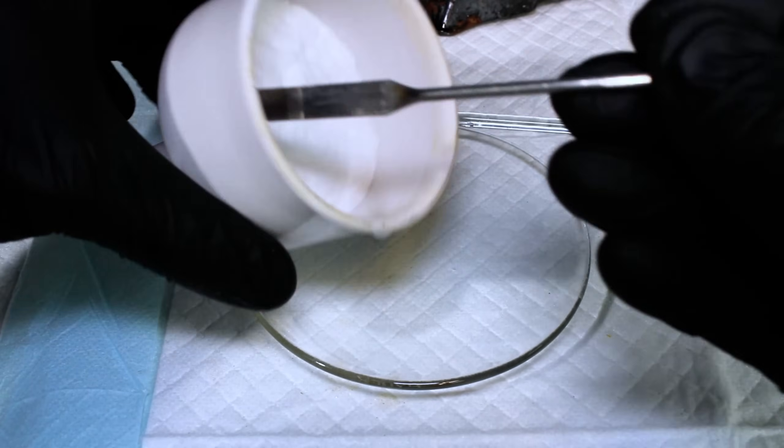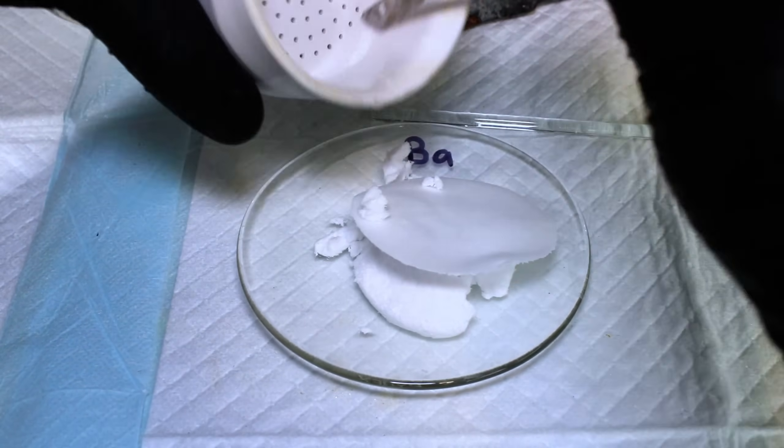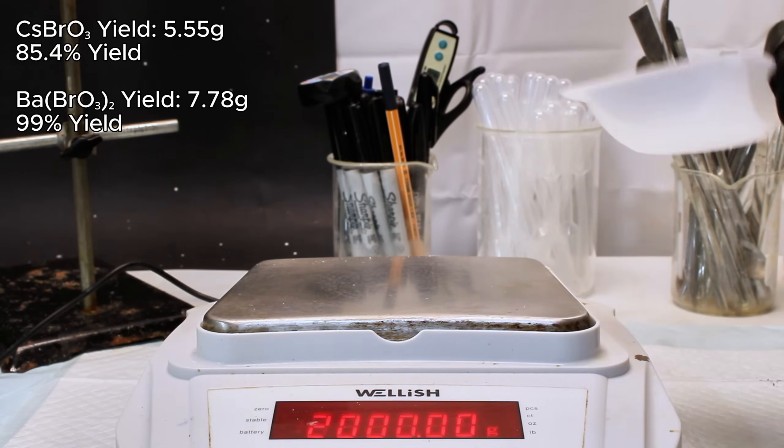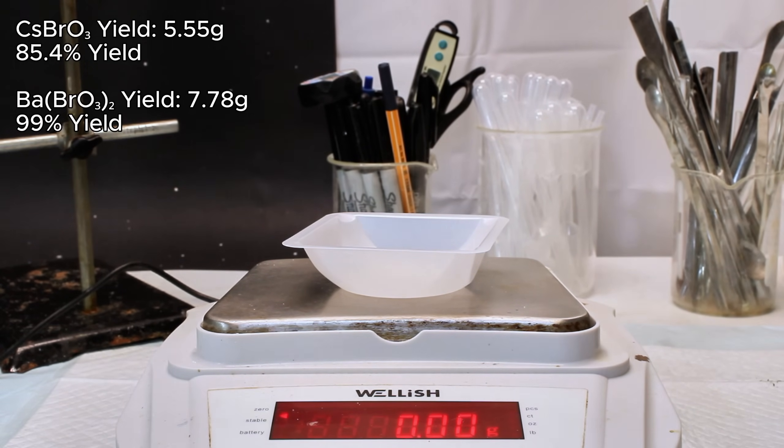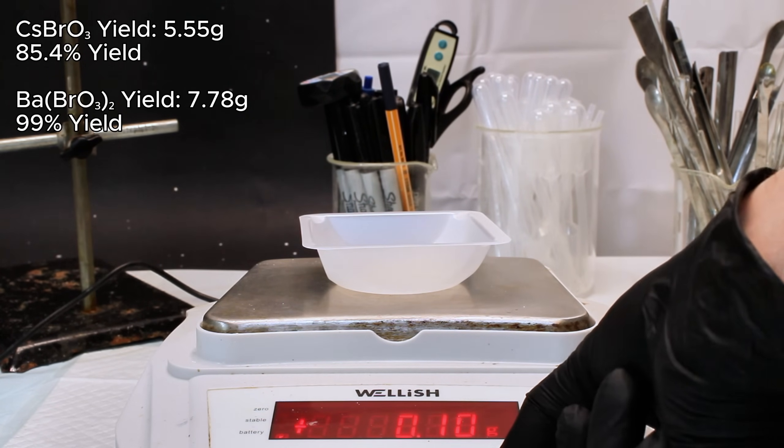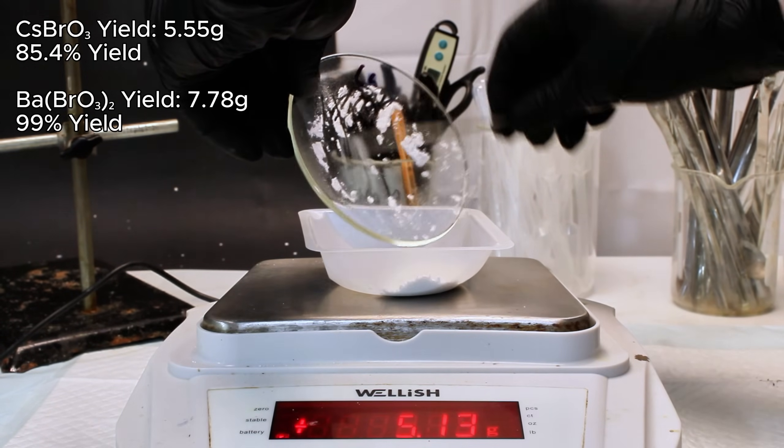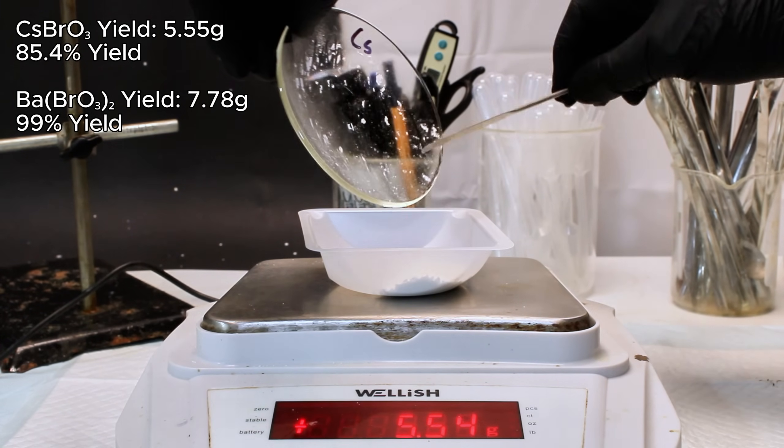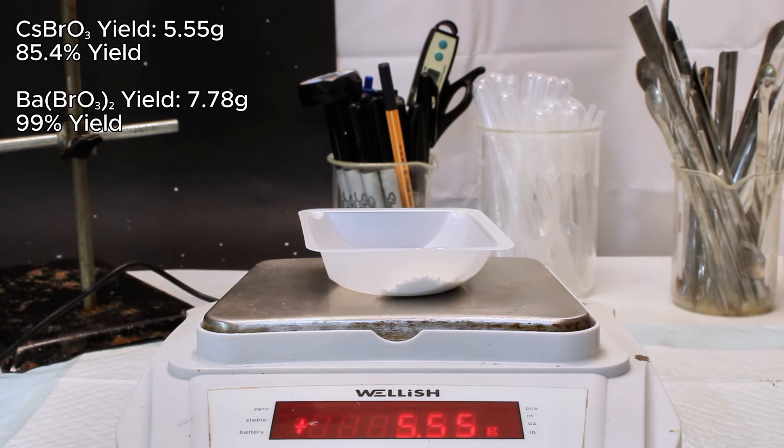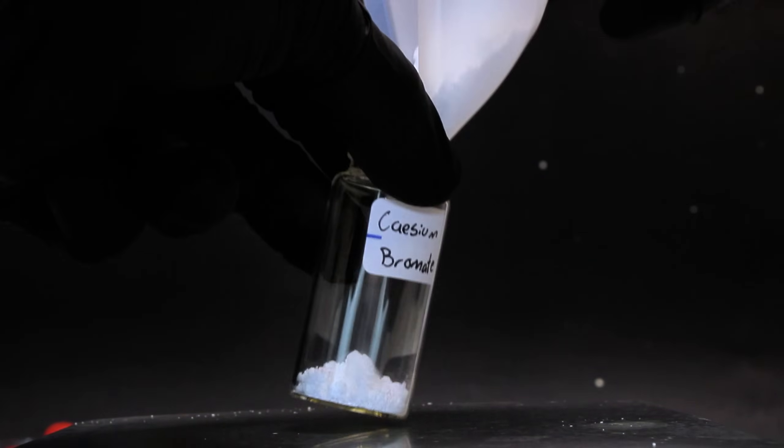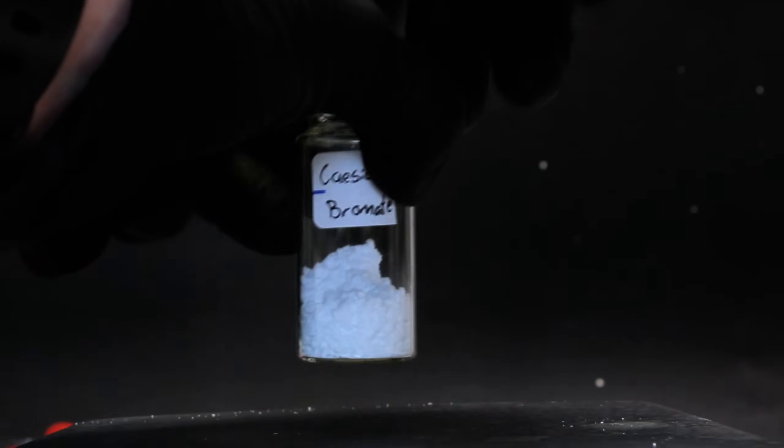When I came back the next day, I was greeted with two nearly identical powders, which I then weighed for a final cesium bromate mass of 5.55 grams, representing an 85.4% yield, and a final barium bromate mass of 7.78 grams, representing a 99% yield. These type of reactions should be nearly 100% efficient, and I blame the lower efficiency of my cesium salt on the fact that cesium chloride is very hygroscopic, and since I didn't dry it beforehand, I likely didn't start with a full 4.2 grams.